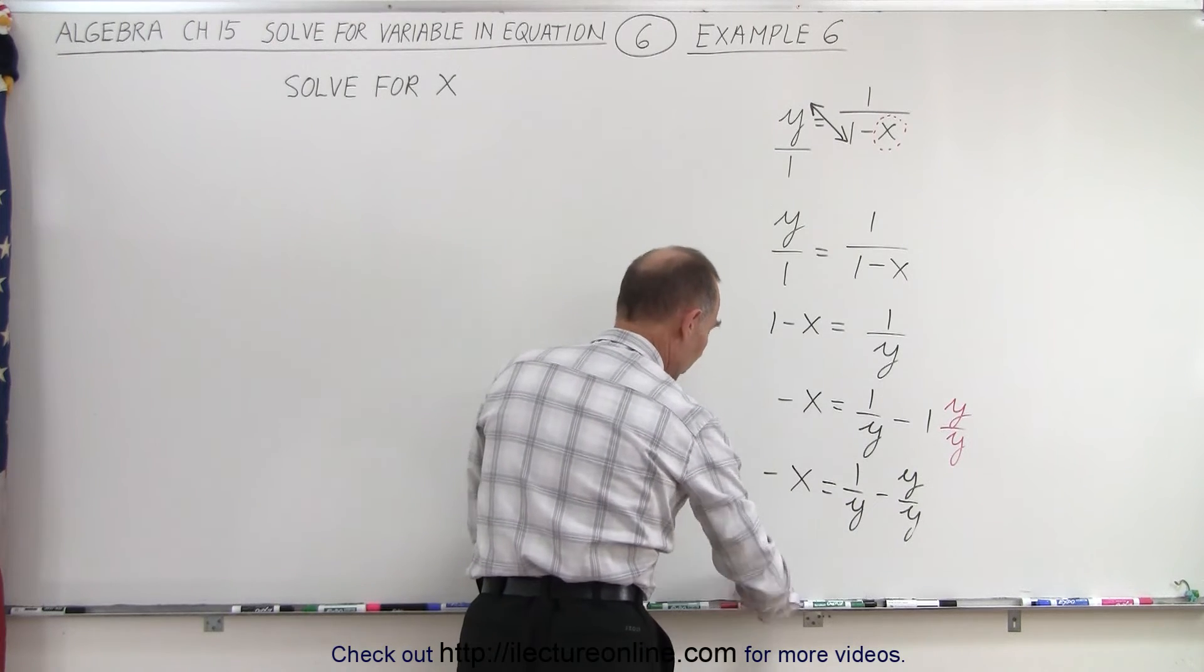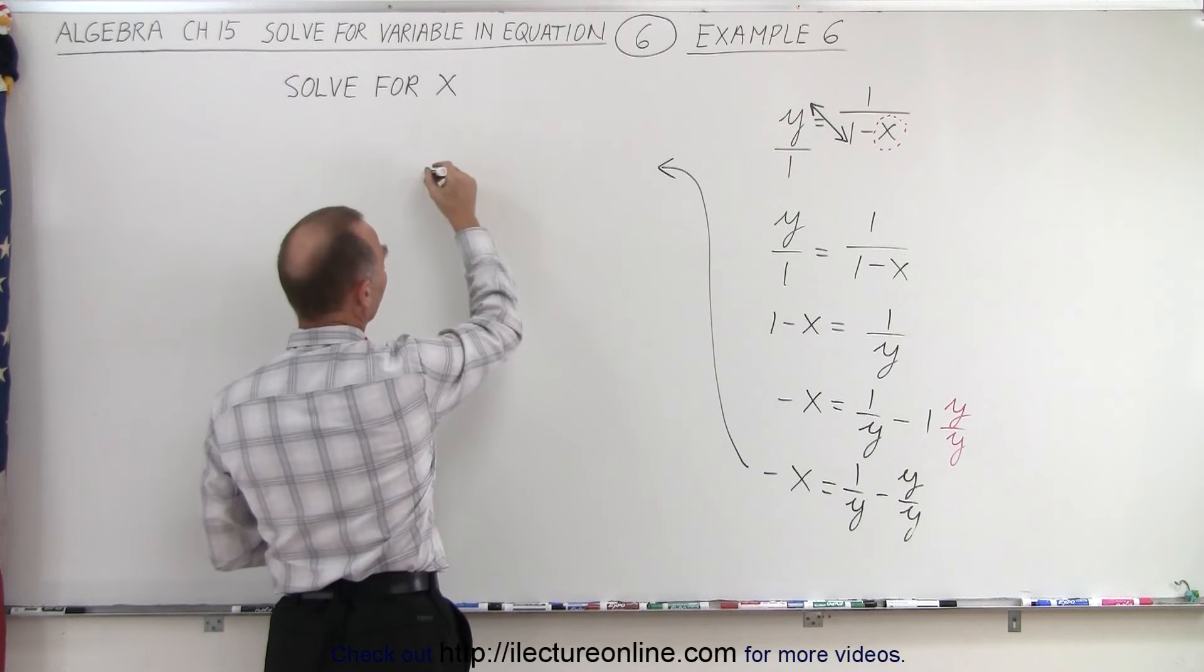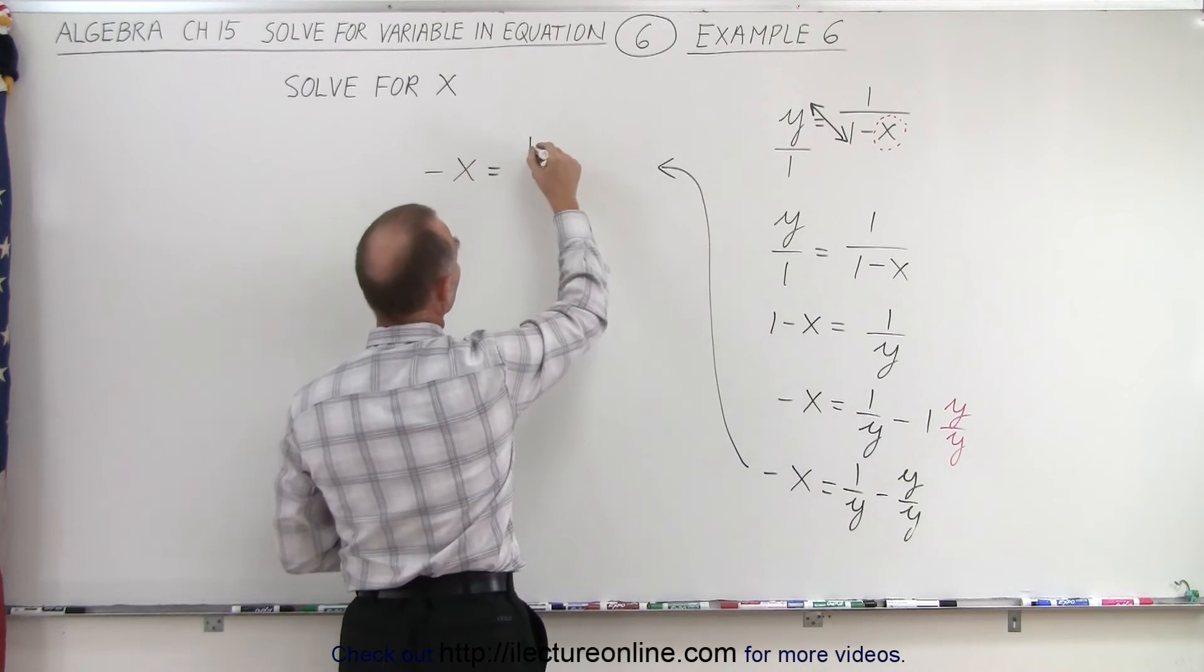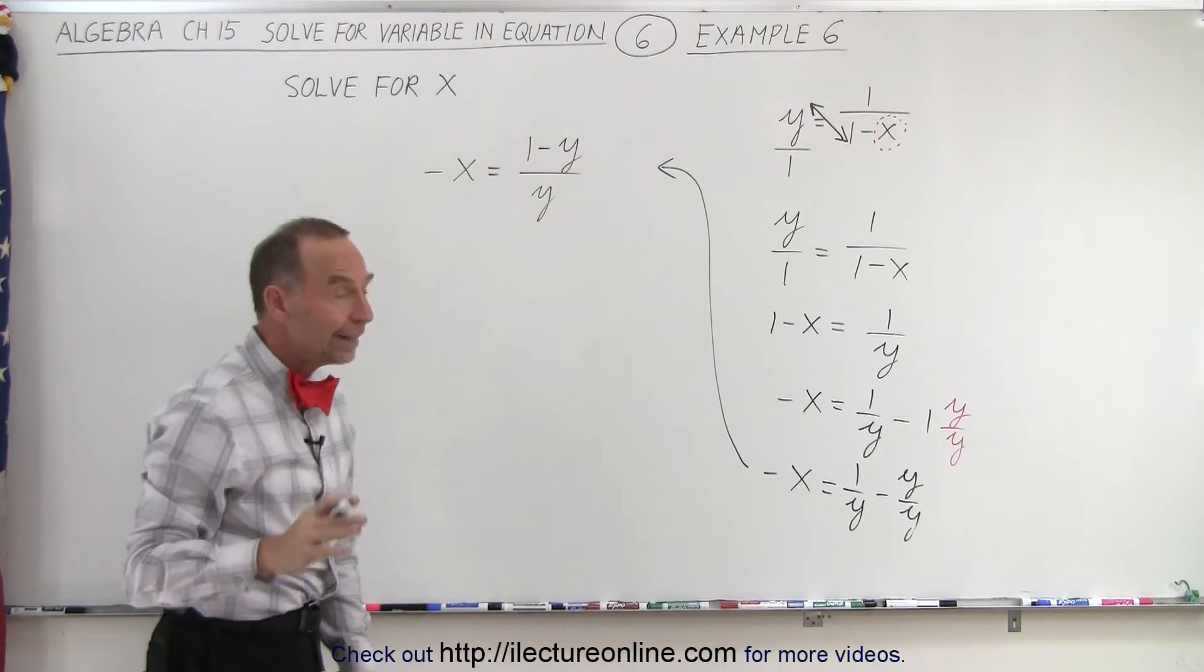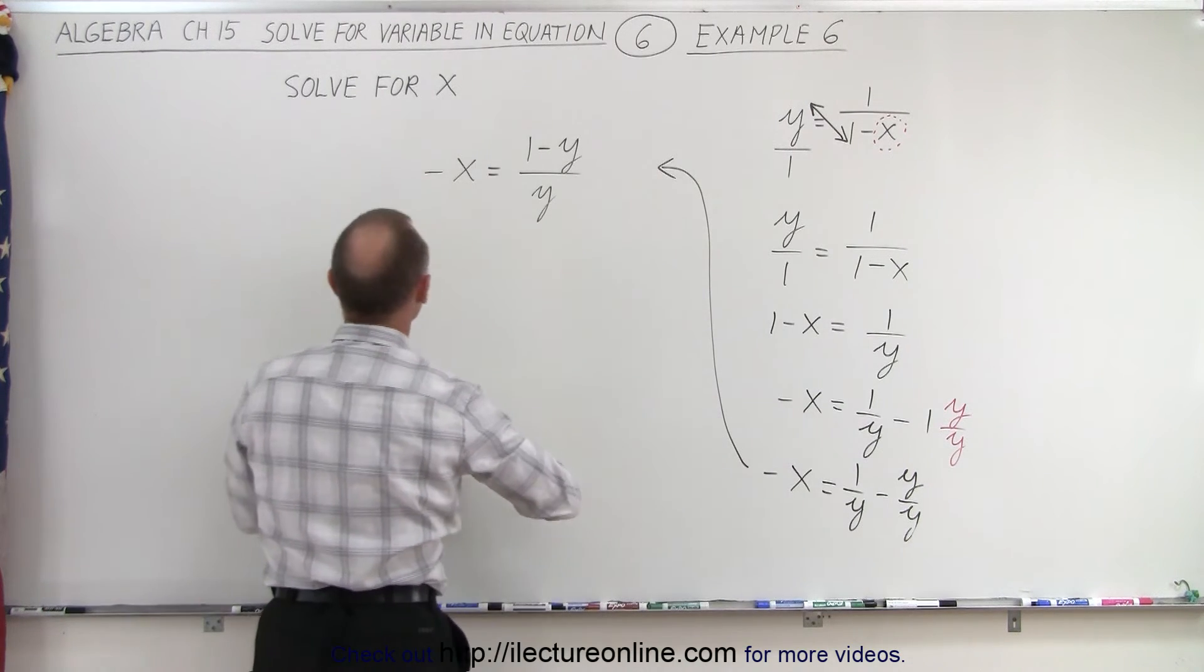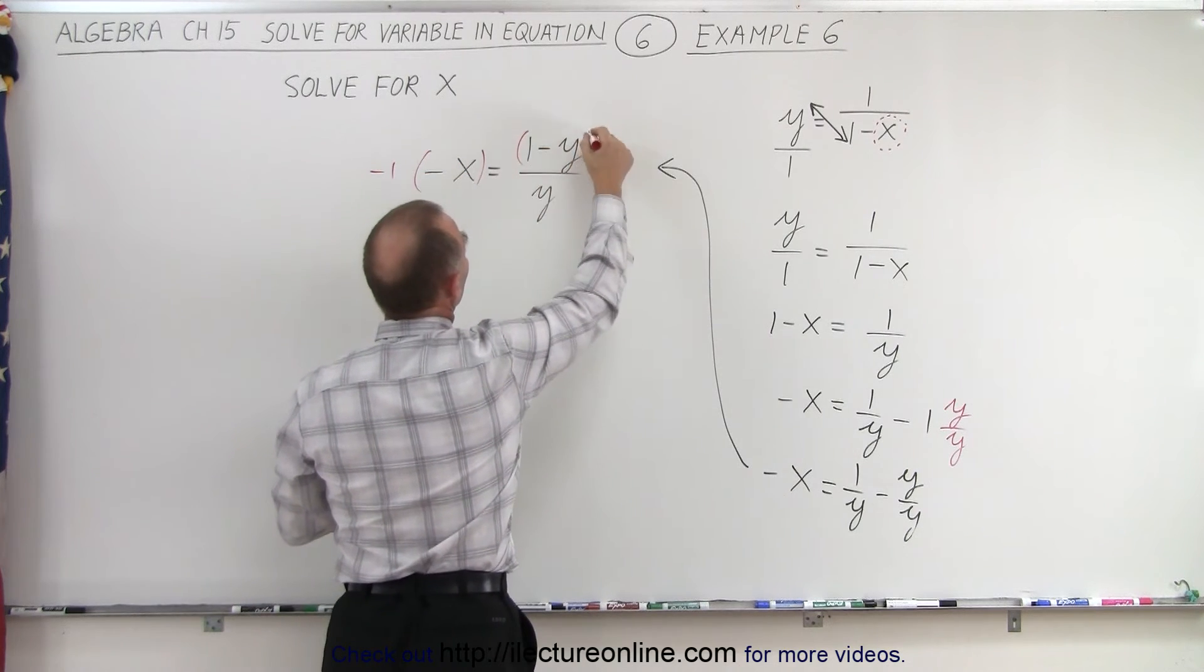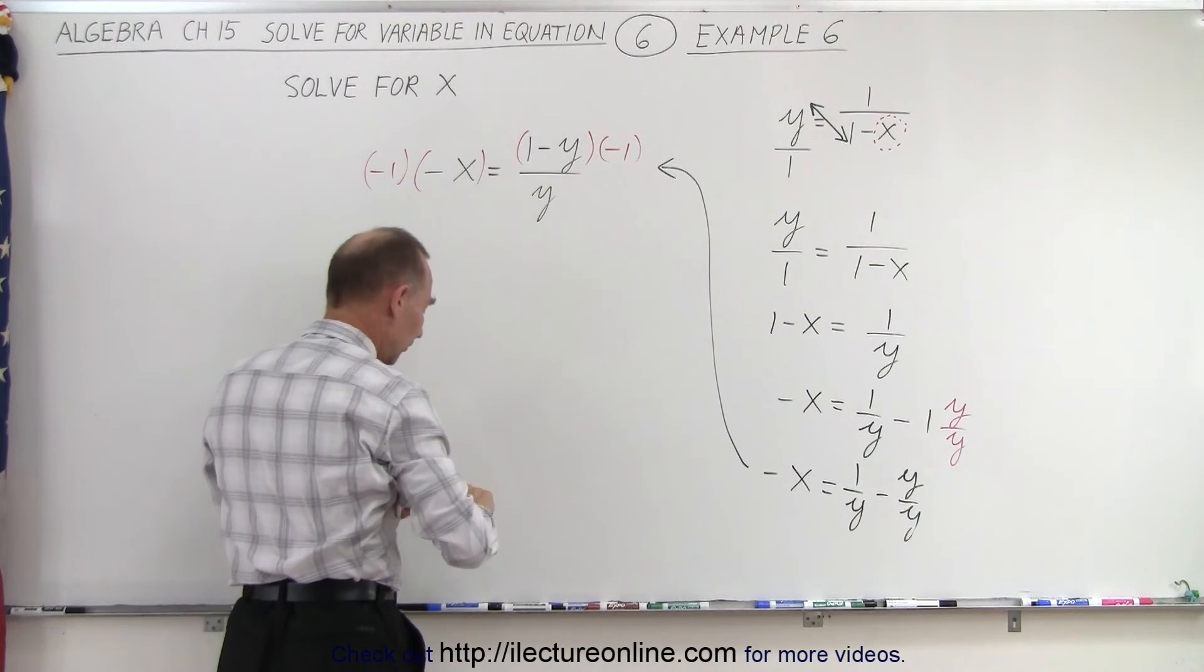So let's continue over here. So now we have minus x is equal to 1 minus y in the numerator, and simply a y in the denominator. And then to get rid of this negative sign, we're going to multiply both sides of the equation by negative 1. So we're going to multiply the left side by negative 1, and the right side by negative 1 like this to get rid of the negative, negative,